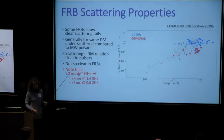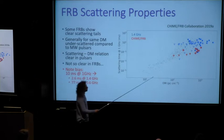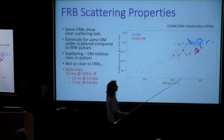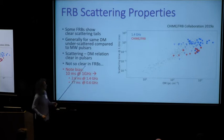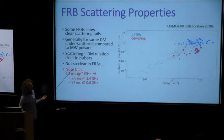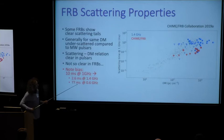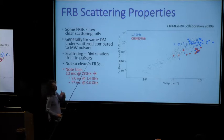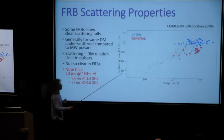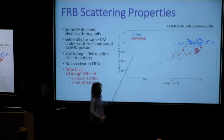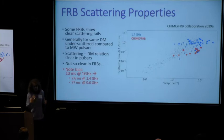I want to start pointing out biases, because that is a big part of the FRB game we all have to understand. Why are all the CHIME events less scattered than the 1.4 GHz events? Because CHIME can only measure certain values. A 10 ms burst at 1 GHz would be 2.6 ms wide at 1.4 GHz — measurable — but 77 ms in the CHIME band, which we would have a very hard time detecting. So there's a huge bias against finding highly scattered events in CHIME.